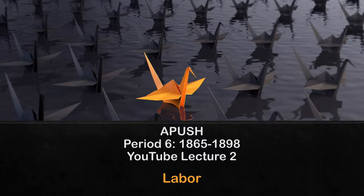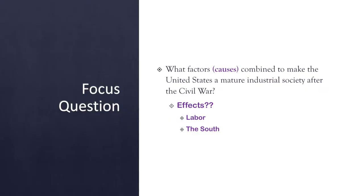Now, this is just an overview of the key concepts for this. Some of the things we're going to do are more specific in class, but at least you'll have some background knowledge before we actually do some of the lessons later on. You might remember in the first video I had the same focus question, and I'm going to keep it here because we're thinking of causes and effects as one of our skills that we use in AP U.S. History. These causes or factors helped create the United States into its industrial society, but here we're going to focus a lot more on the effects — the rise of labor, and also what happens in the South at this time.